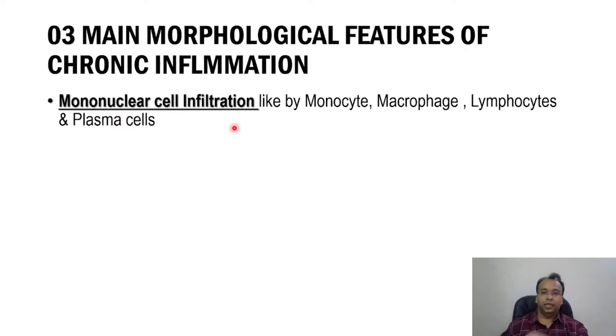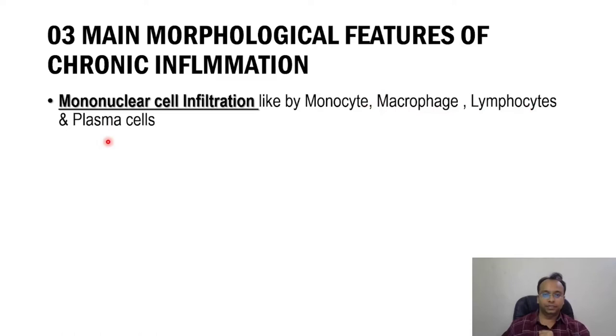This is the heart of today's lecture: the morphological features of chronic inflammation. In any chronic inflammation there are three main morphological features. One is mononuclear cell infiltration. Mononuclear cells are cells having a single nucleus. Examples are monocytes, macrophages, lymphocytes, and plasma cells — these are the mononuclear chronic inflammatory cells.